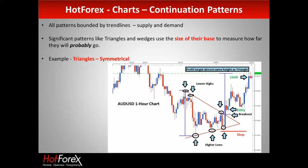Here's a typical symmetrical triangle with all the key things in place. We've got a lower trend line at the bottom — hit it three times — and a higher trend line at the top. This is a one-hour AUD/USD chart going down. We've progressed along the triangle, broken out, and the base distance suggests the target might be up here. That's what trend lines give us.